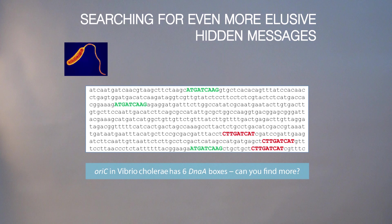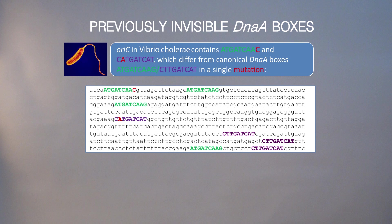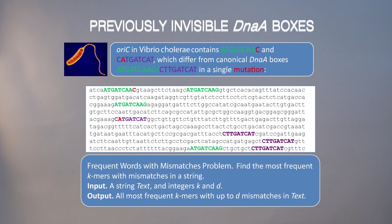If you look carefully, you will see that in addition to the six hidden messages, there are two more. There are actually two DnaA-mers that look almost like canonical DnaA-mers — they differ just in a single mutation. They also represent DnaA boxes because DnaA can bind not only to the perfect DnaA-mer, but to different variations of it.